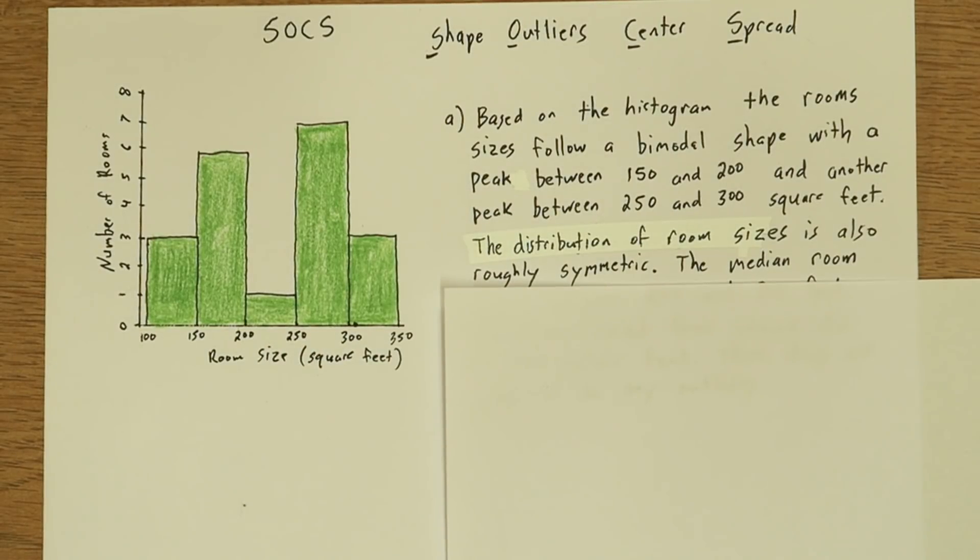Now in part A, they say based on the histogram, write a few sentences. So even though we know what the value of the median is from part B, we're going to try to figure it out from only this histogram. So since there's 20 rooms, the median would be the value between the 10th and 20th room when they're arranged by square footage.